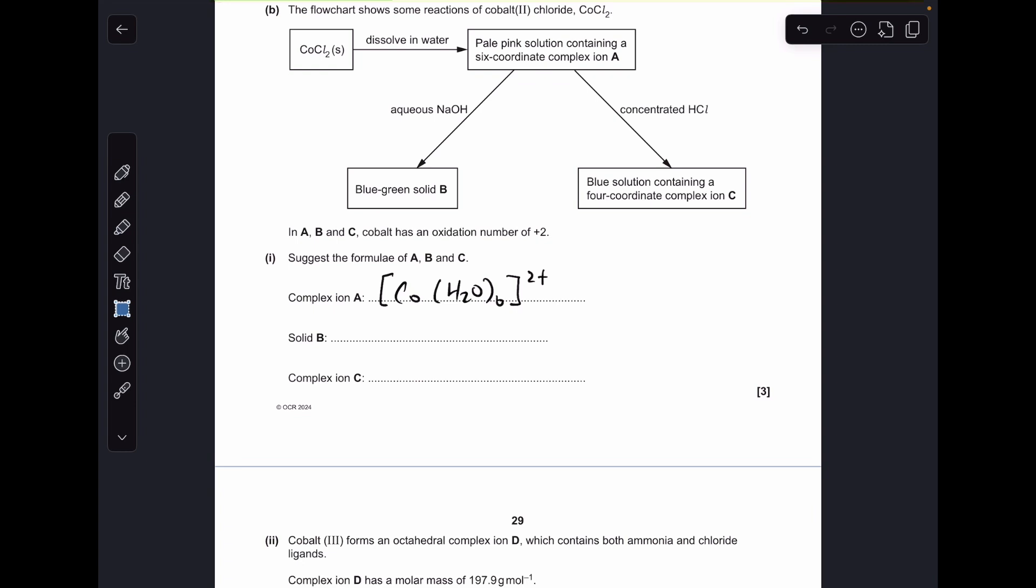Solid B—this blue-green solid being formed by adding aqueous sodium hydroxide to complex A—so that's obviously going to be a hydroxide precipitate. You can either write Co(OH)₂, just give that simple formula, or you could write [Co(OH)₂(H₂O)₄], you could even put that in a square bracket like that.